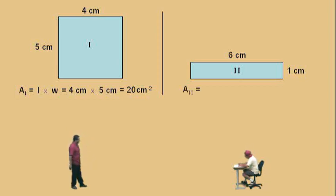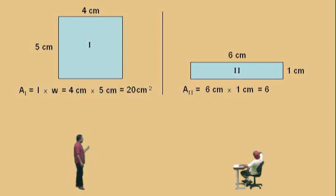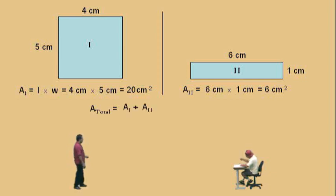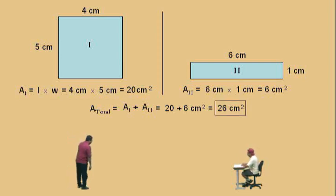Now let's go to rectangle 2. Area 2 is 6 centimeters times 1 centimeter — what's 6 times 1, Charlie? 6. And how do you write centimeters times centimeters? Centimeters squared. That's right. So to get our total area, we're going to sum up area 1 and area 2. Area 1 plus area 2 is 20 plus 6 centimeters squared, which gives us 26 centimeters squared. And there's our answer — 26 centimeters squared. Very nice, Charlie.